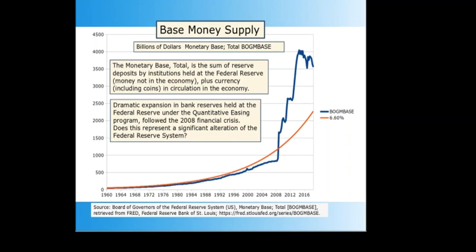The base money supply is the sum of currency — Federal Reserve notes and coins — plus deposits in the Federal Reserve itself, which are the bank reserves. These reserve deposits are not available in the economy and are part of the internal bookkeeping of the Fed monetary system. The dramatic expansion during the quantitative easing program implies a possible transformation of the Fed system underway — an attempt to insulate the system from debt deflation and insolvency by providing an arbitrary money source. Perhaps the Federal Reserve is laying the groundwork to be even more independent of Federal Government policy and democratic influence.